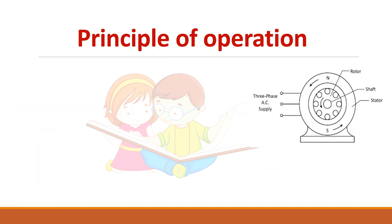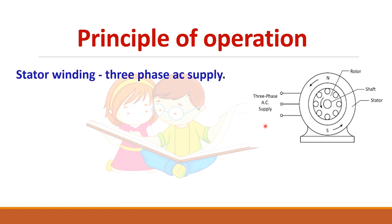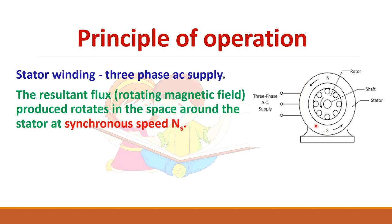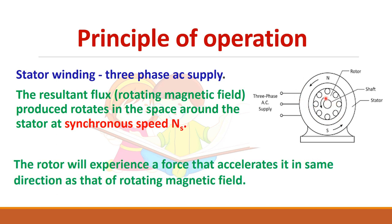The principle of operation of a three phase induction motor: three phase AC supply is given to the three phase stator winding, producing a rotating magnetic field of constant magnitude rotating at synchronous speed. This rotating field interacts with the stationary rotor, which experiences a force and starts to rotate in the same direction as the field.